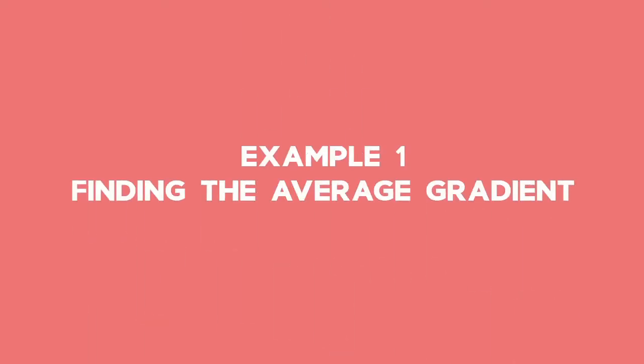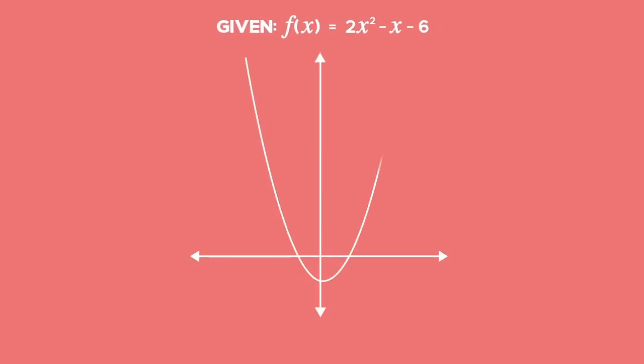Example 1: Finding the average gradient. Given the graph with equation f of x equals 2x squared minus x minus 6, find the average gradient between x equals 1 and x equals 4. Solution: To find the average gradient, plot the points where x equals 1 and x equals 4 on the parabola. Join the two points.